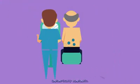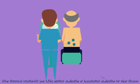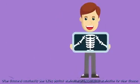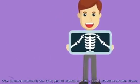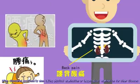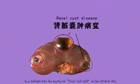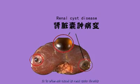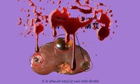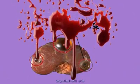Simple renal cysts are usually asymptomatic, often discovered occasionally when taking a physical examination or imaging examination for other diseases. Some patients have the symptom of lower back pain on the affected side, though it is often not caused by the renal cysts directly.